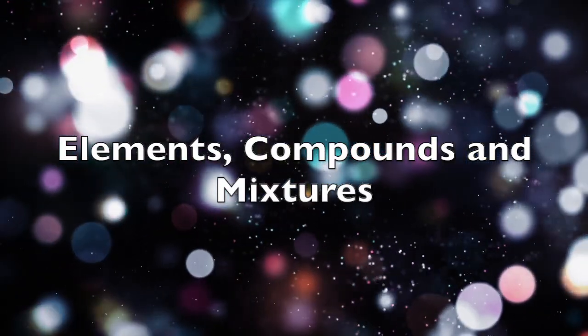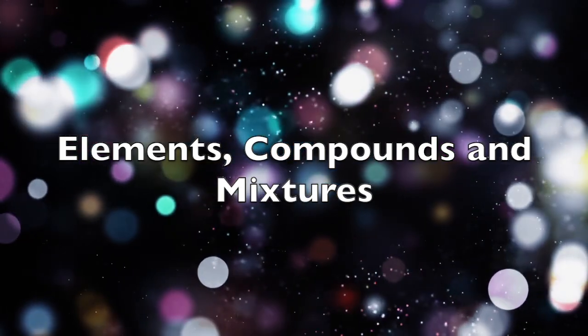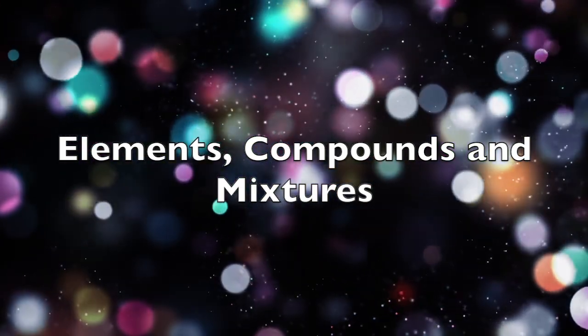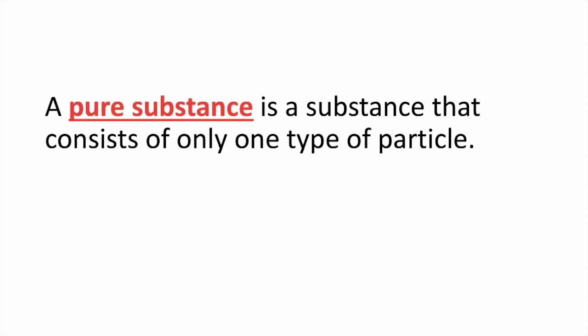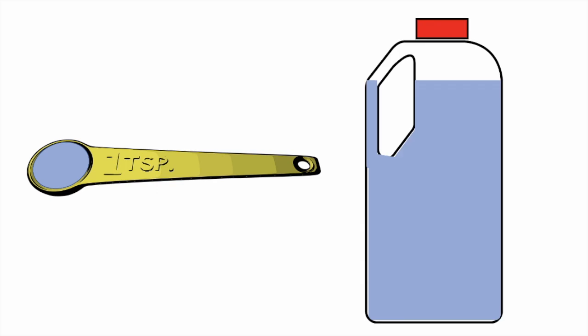In this video we will be talking about elements, molecules, and compounds. A pure substance is a substance that consists of only one type of particle. With a pure substance, the properties of that substance are the same no matter how much of the substance you have. For example, a teaspoon of water and a gallon of water both have the same chemical and physical properties. There are two main types of pure substances: elements and compounds.